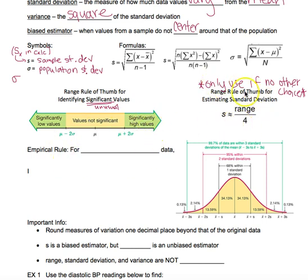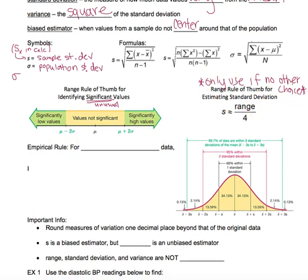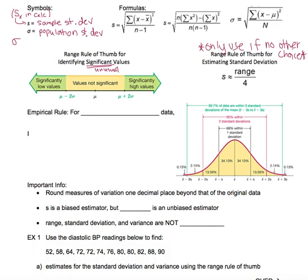If they give you the entirety of the data set, we're always going to use one of the formulas. But if for some reason they didn't, an estimate for standard deviation could be taking the range and dividing it by four. It's kind of only for an emergency situation, but that is one way to estimate the standard deviation.